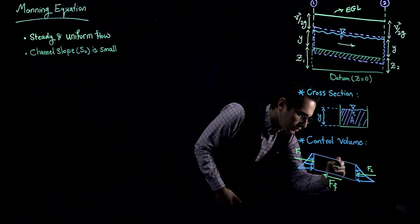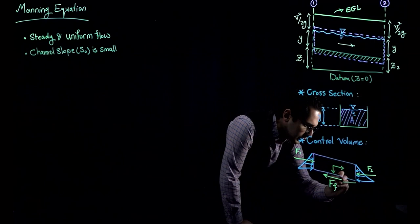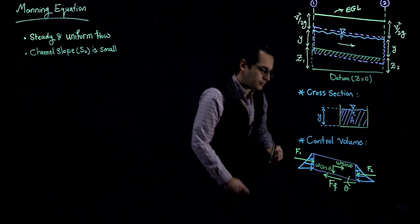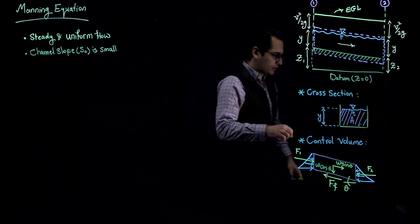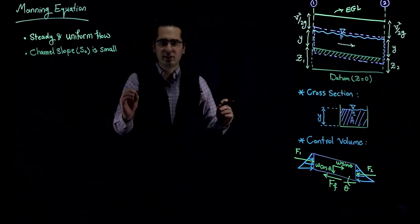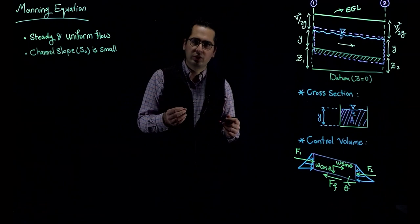I'm going to show the two components of the weight. One is in this direction and the other one is in this direction. If this angle over here is theta, this would be W sine of theta, and this would be W cosine of theta. These are all the forces acting on this control volume. What I'm going to do next is write down the momentum equation and plug in all these forces acting on the control volume.